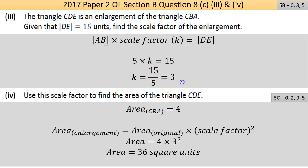It then says part 4: use the scale factor to find the area of the triangle CDE. Now the area of CBA we calculated and proved was 4 square units, and CBA is the smaller of the two triangles.